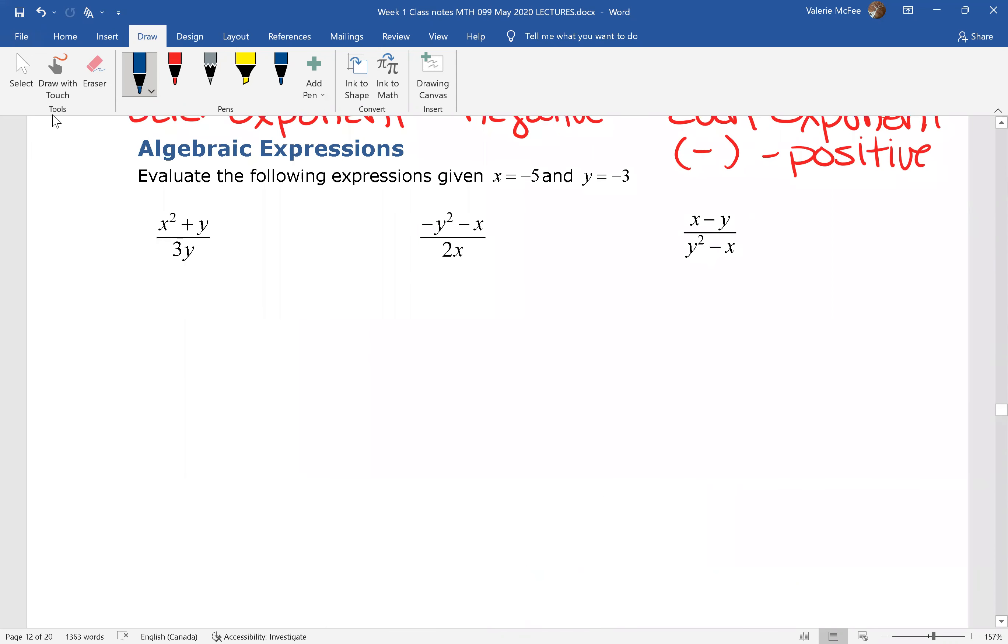Now, this becomes important when we're evaluating algebraic expressions. These are known as expressions because they have no value unless we give values to x and y. In this case, we're going to let x equal negative 5 and y equal negative 3. I'm going to suggest that whenever you're given a negative value for a variable, it's a good idea to use brackets. So we have negative 5 all squared, because notice I'm squaring x, and x is negative 5, plus y, which is negative 3, all over 3 times y.